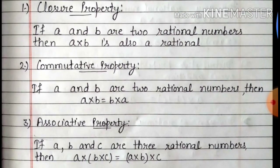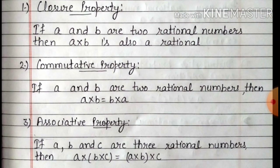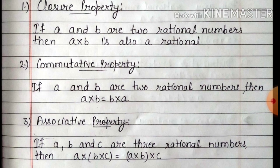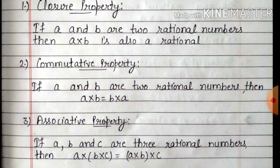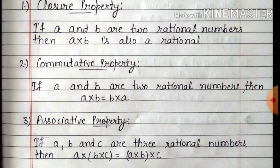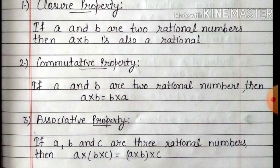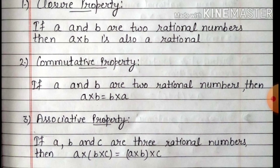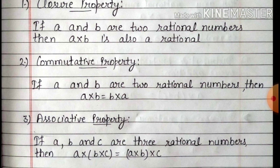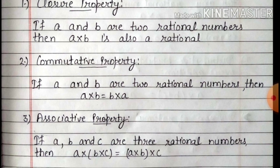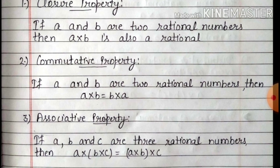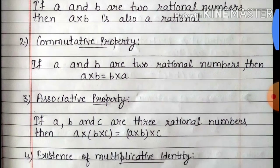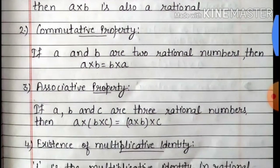Now second is commutative property. If A and B are two rational numbers, then A multiply B is equals to B multiply A. यानि कि अगर हम two rational numbers को multiply कर रहे हैं और उनका अगर हम order change करें, तब भी multiply करके answer same आएगा. So A multiply B equals to B multiply A.